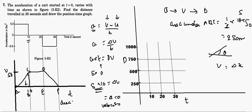Since velocity equals displacement per unit time, it corresponds to the slope of the position-time graph. Because the slope is increasingly increasing from 0 to 10 seconds, the position-time graph will be parabolic — increasing in a curved upward way during this interval.